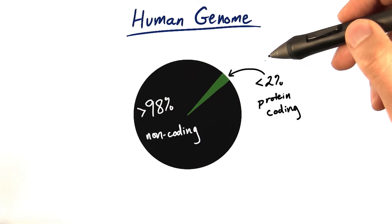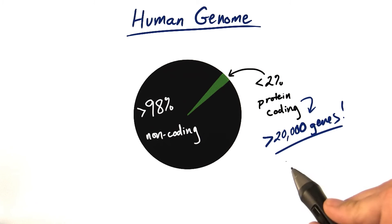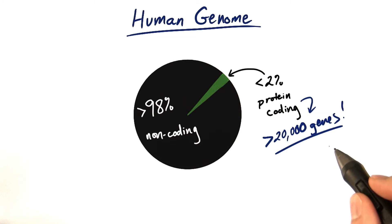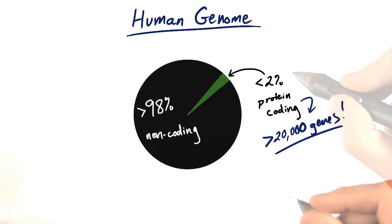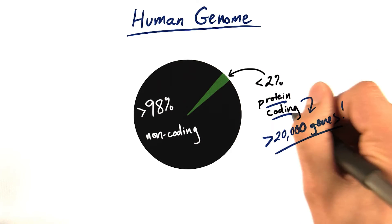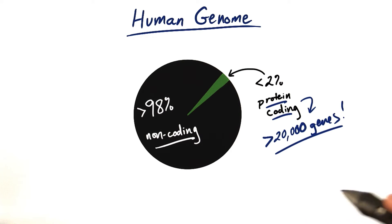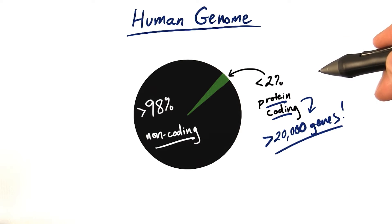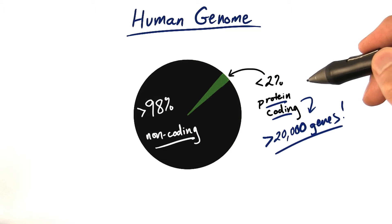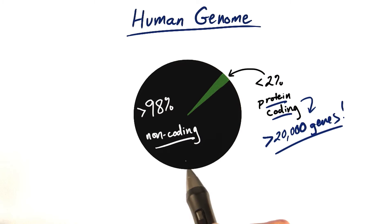While less than 2% of the human genome actually counts as coding for anything, there are more than 20,000 genes in just that 2%. We refer to this major division in the genome as protein-coding DNA and non-coding DNA. The rest of this lesson will continue to cover how this 2% of our genome codes for all those proteins, while the next lesson will start to reveal more about the role of this 98% of non-coding DNA.